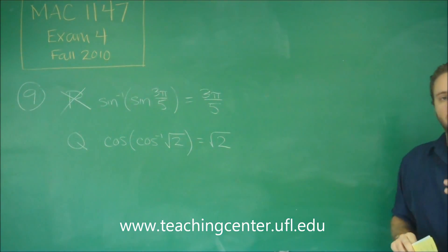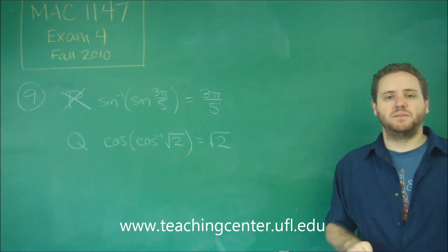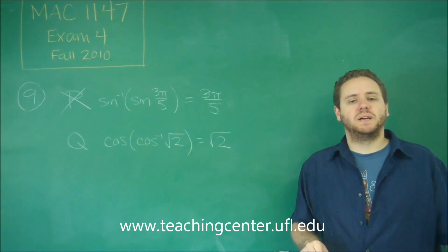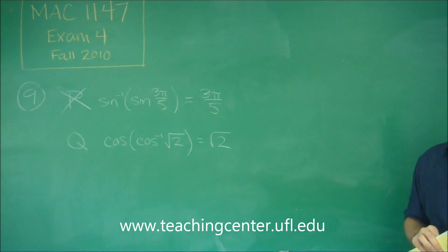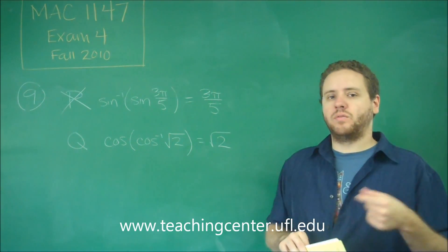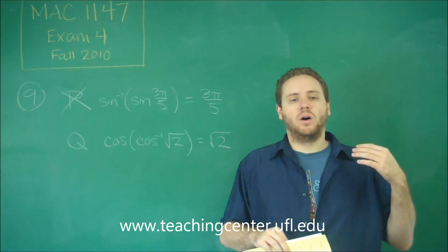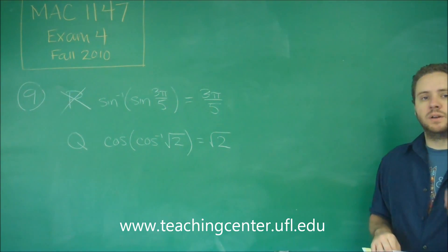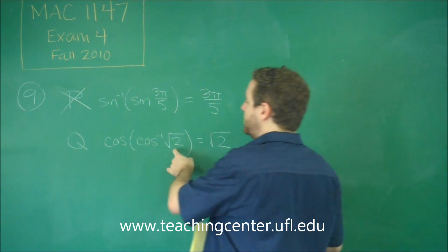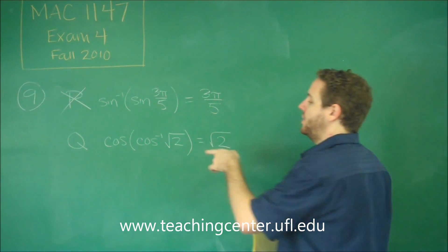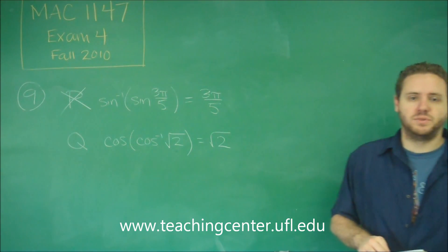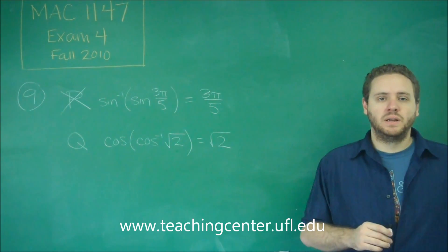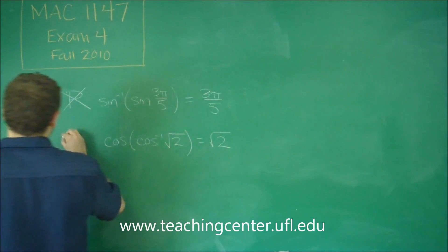So remember that the range of your cosine function, and your sine function for that matter, are negative 1 to 1. Like when you do the cosine of anything, you could only get something between negative 1 and 1. Which means the domain of arc cosine and arc sine are negative 1 to 1. You could only plug in things between negative 1 and 1 to arc cosine. Square root of 2 is bigger than 1. So you can't do arc cosine of root 2, because if you're doing the arc cosine of anything, it has to be in between negative 1 and 1. So this one is again false.